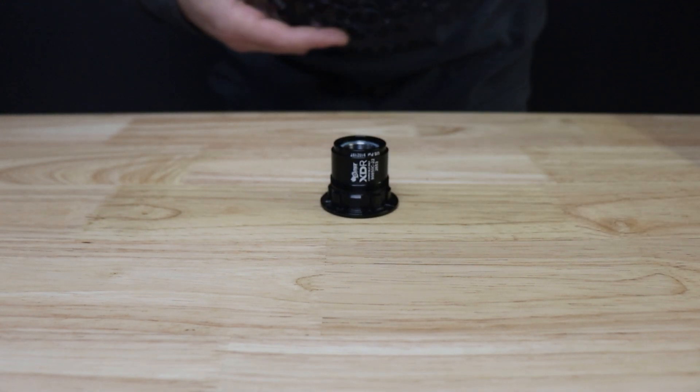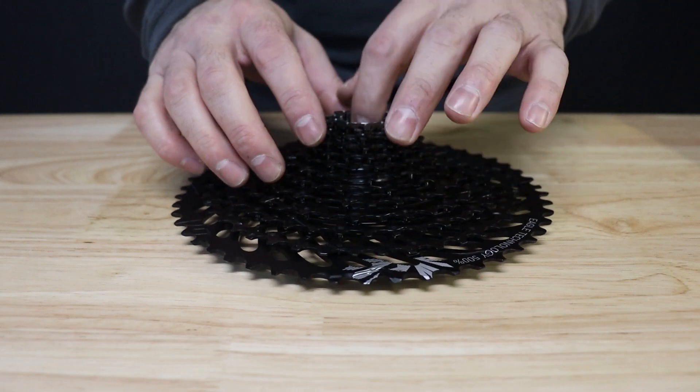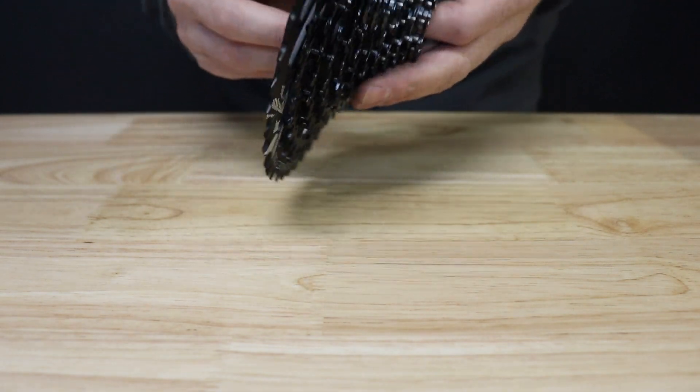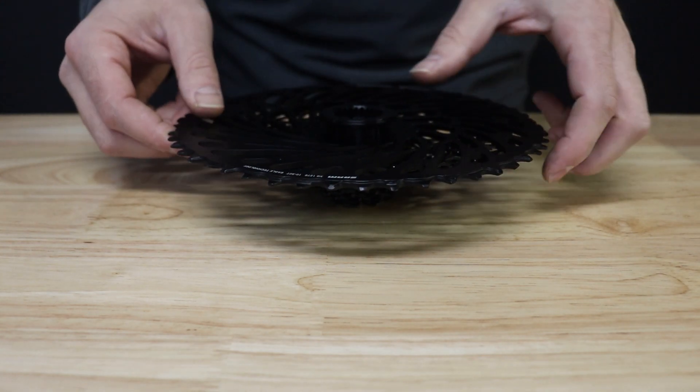Let's see what happens when you install an XD cassette on an XDR freehub body. You'll notice when you place the cassette onto the freehub, you'll actually engage on the splines prior to tightening the cassette lock ring.